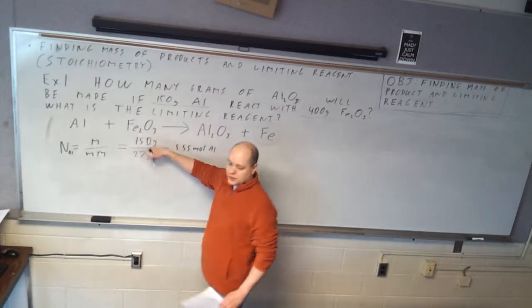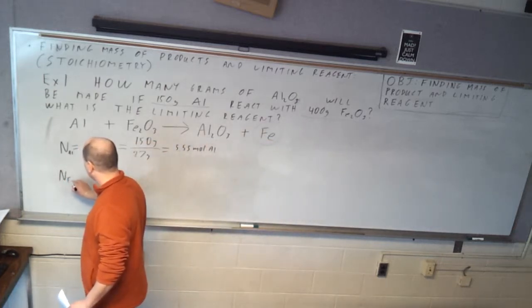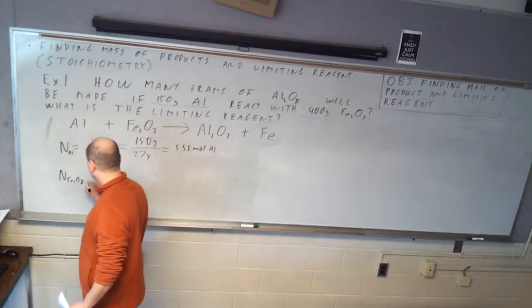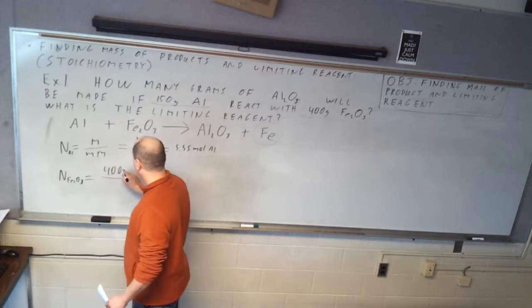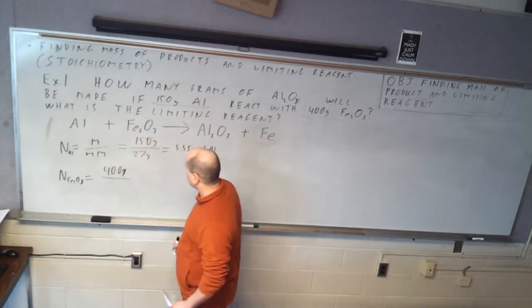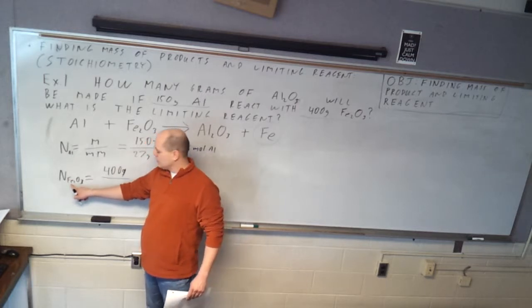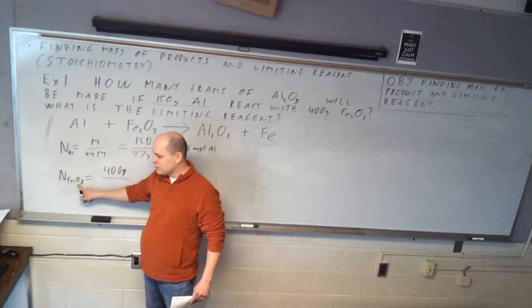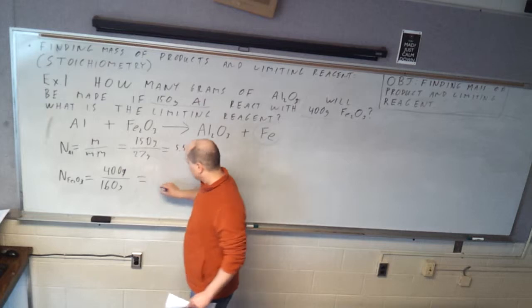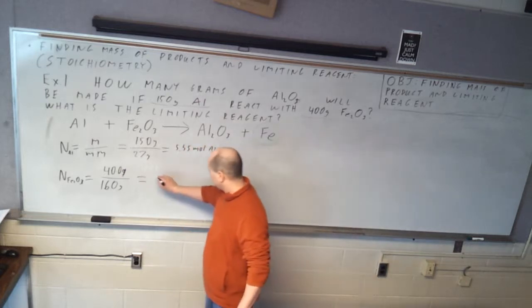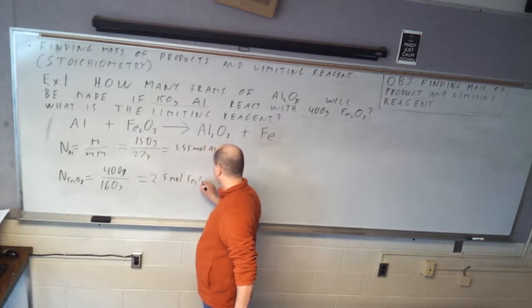We'll do the same thing for iron oxide. Figure out how many moles of that we have. So we'll do number of moles of Fe2O3. And that's going to be 400 grams divided by the molar mass of iron oxide. Okay, iron is 56 times 2, that's 112. Oxygen is 16 times 3, that's 48. 48 plus 112 is 160. 400 divided by 160 is 2.5 moles Fe2O3.